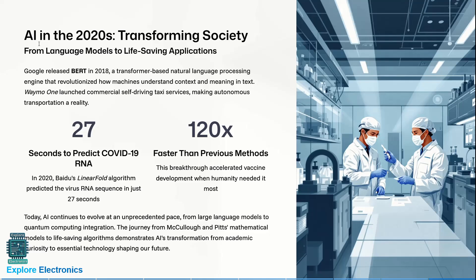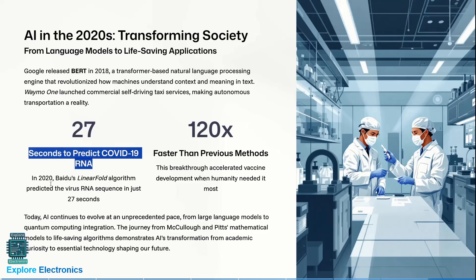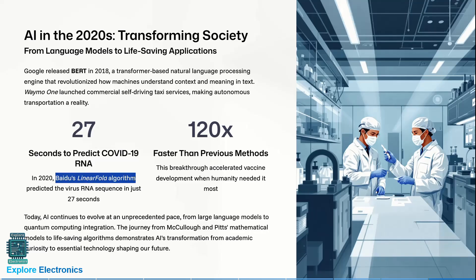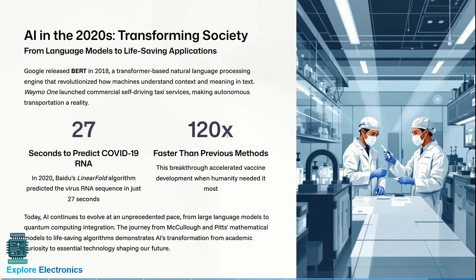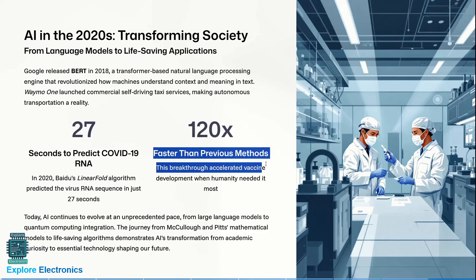In the 2020s, AI is transforming society. Google released BERT in 2018, a transformer-based natural language processing model that revolutionized how machines understand context and meaning in text. Waymo launched commercial self-driving taxi services, making autonomous transportation a reality. Baidu's LinearFold algorithm predicted the COVID-19 virus RNA sequence in just 27 seconds,